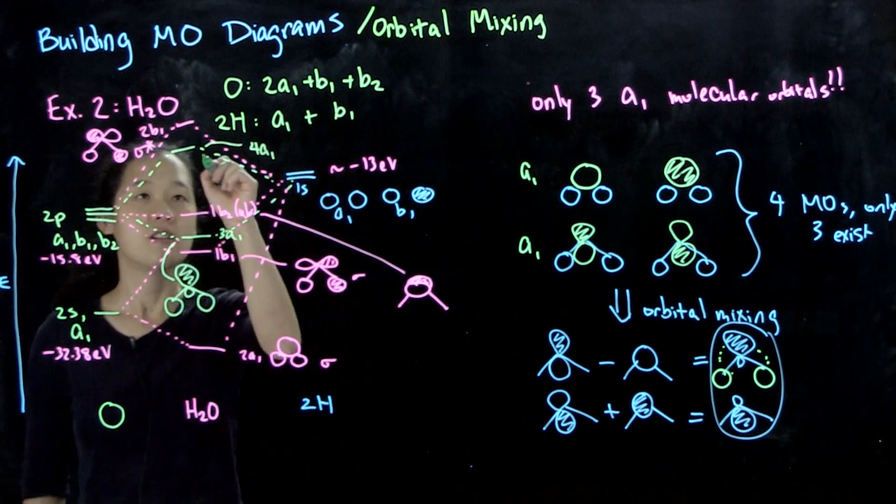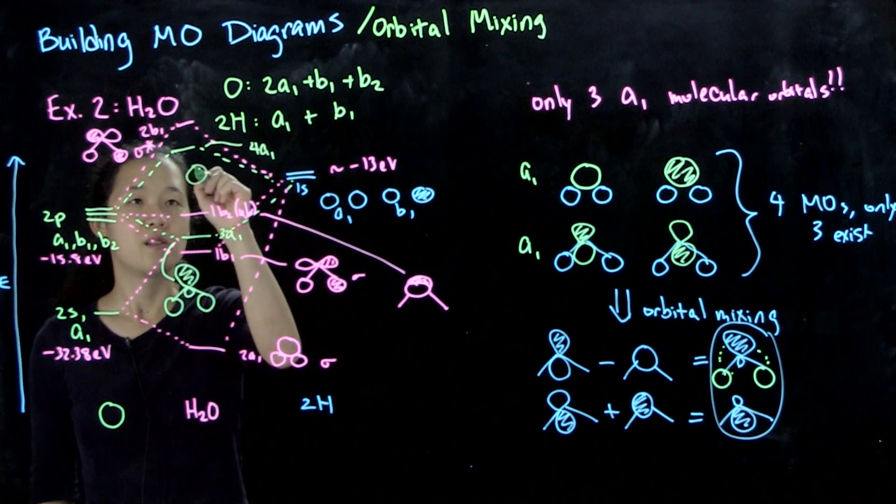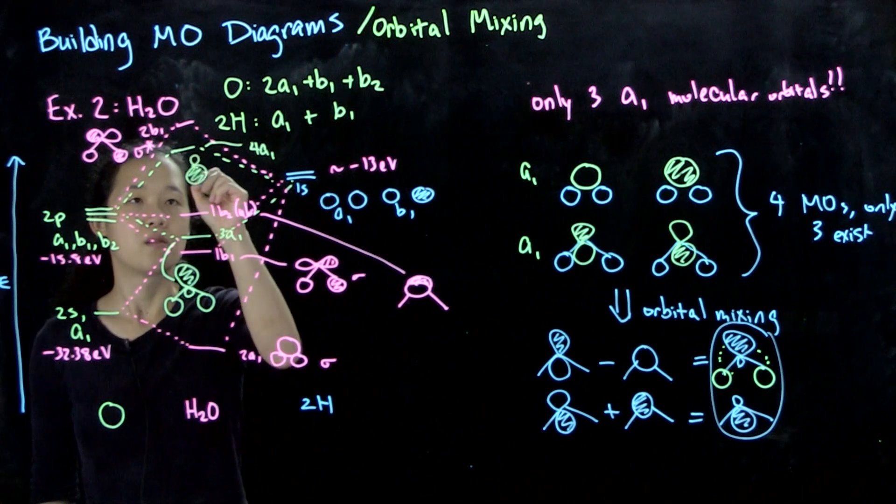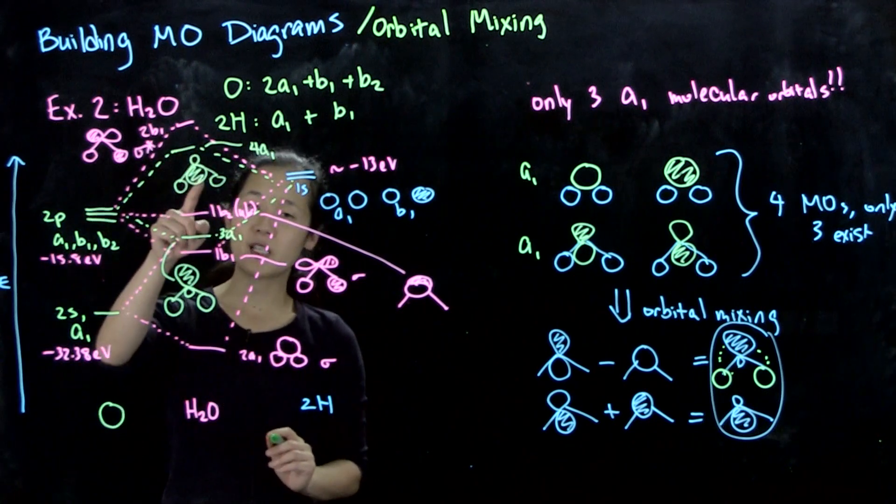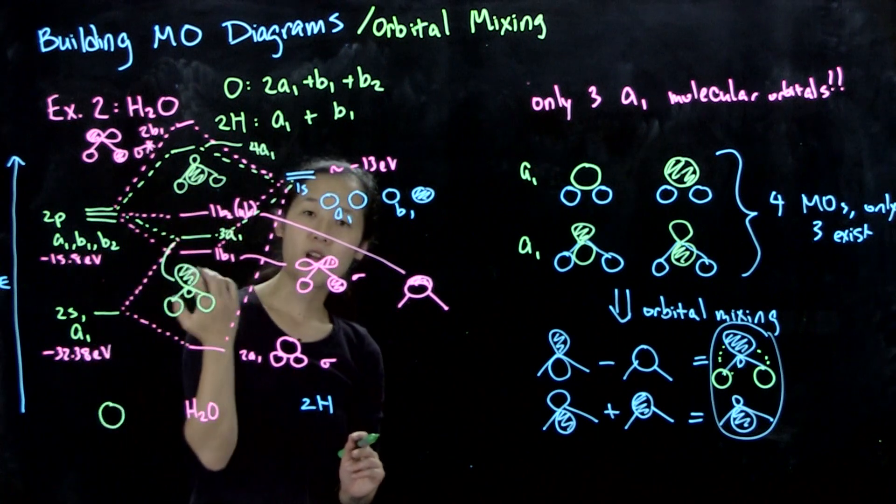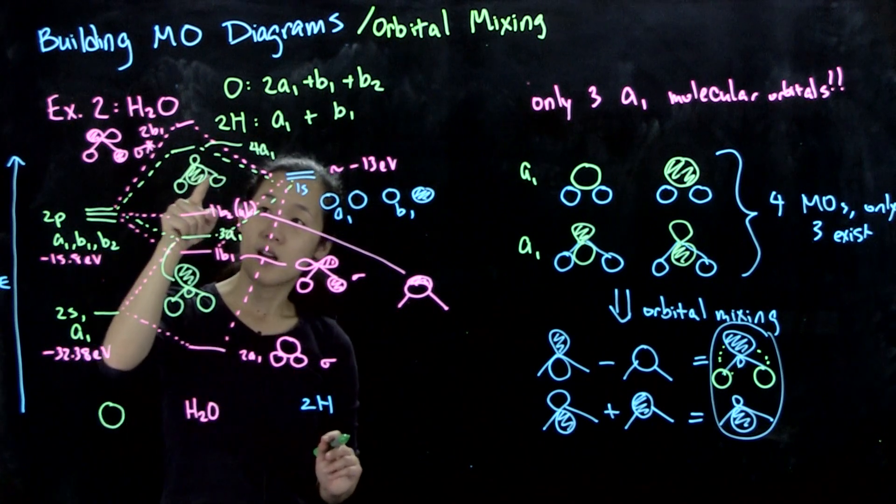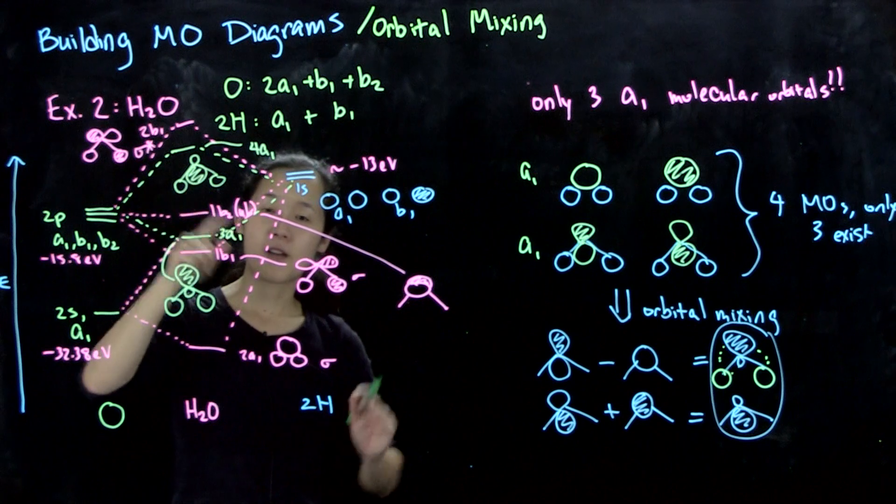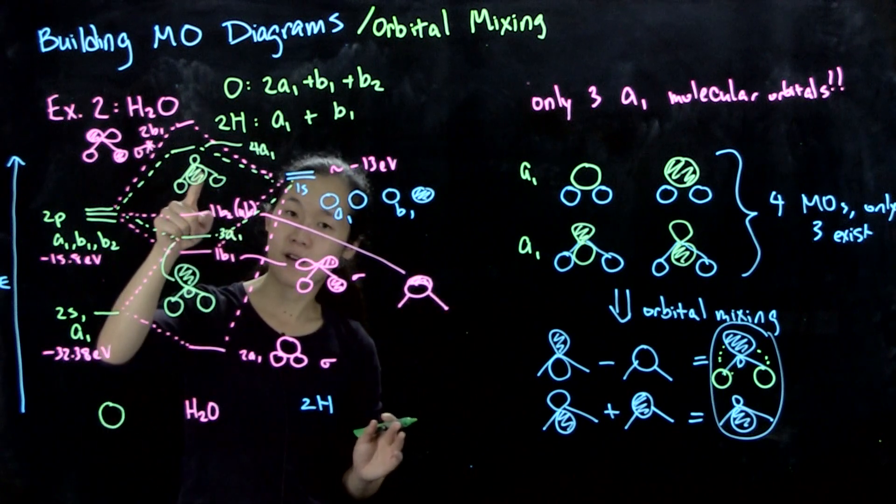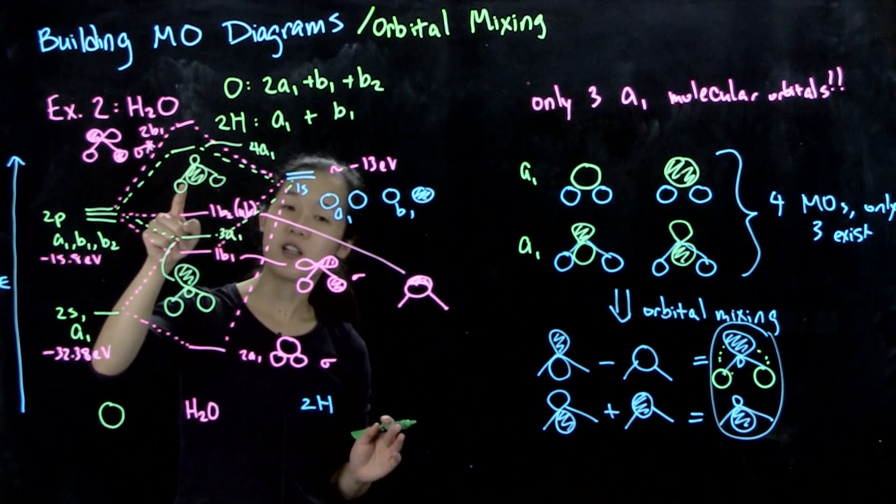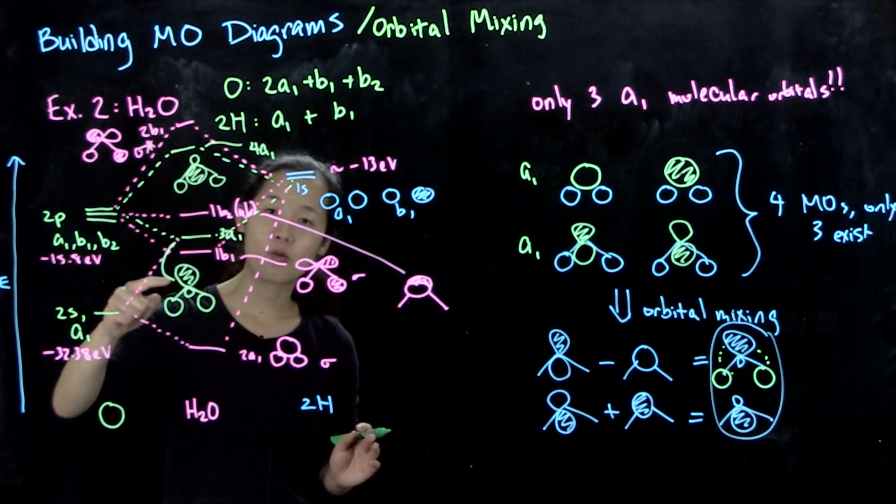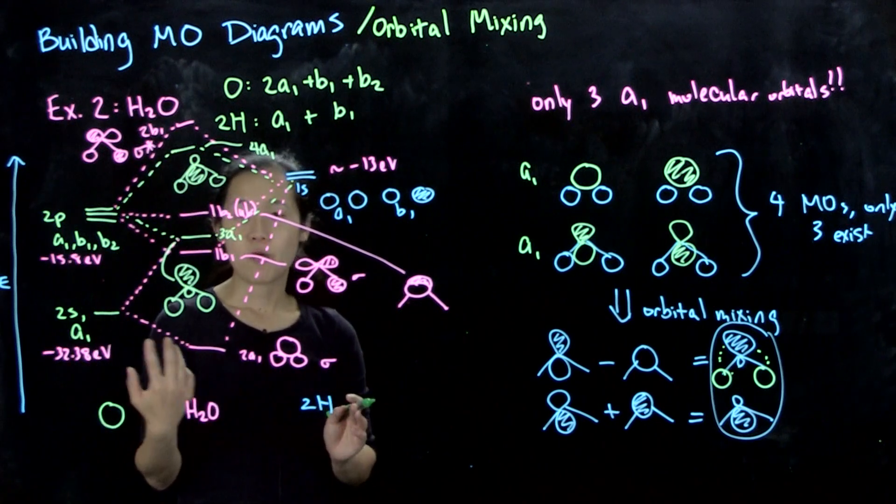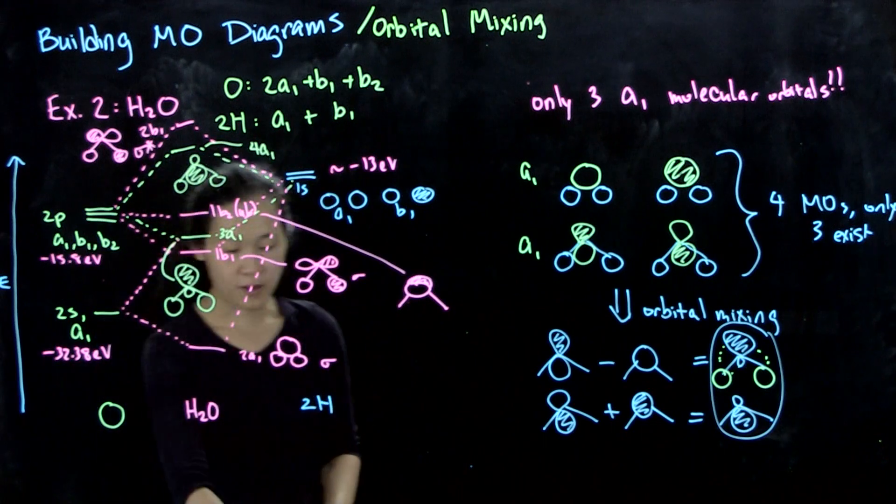You can see that this is more destabilizing because it's gone up in energy. We've made this out-of-phase lobe fatter, so there's greater overlap between this out-of-phase lobe and this unshaded a1 SALC. This is more destabilized, this is more stabilized.